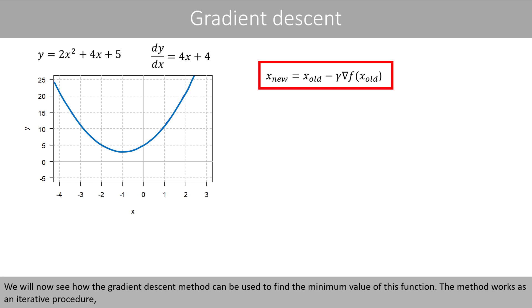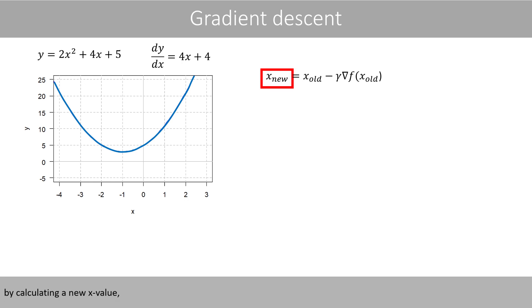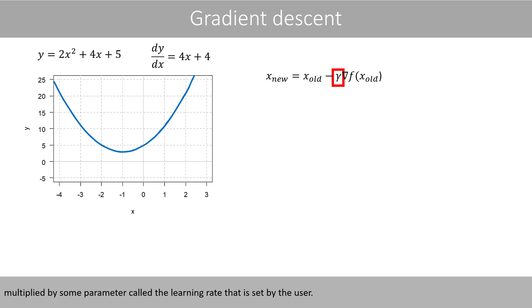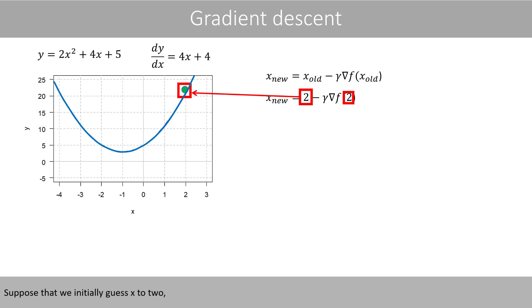We'll now see how the gradient descent method can be used to find the minimum value of this function. The method works as an iterative procedure, by calculating a new x value based on the current x value, minus the gradient or the derivative of the function at the current x value, multiplied by some parameter called the learning rate that is set by the user. The method starts with some initial value of x that is guessed by the user. Suppose that we initially guess x to 2, and that we use a learning rate of 0.1.